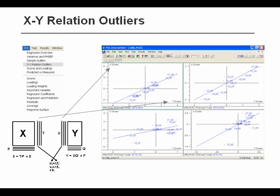There are many additional plots that you can choose when you have made a PLS model. One of the more important one is called XY relation outliers, as shown upper left in the unscrambler. That could also be called the TU score plot.